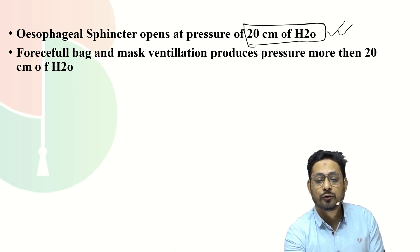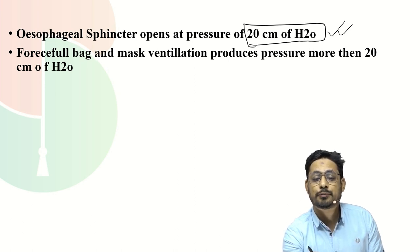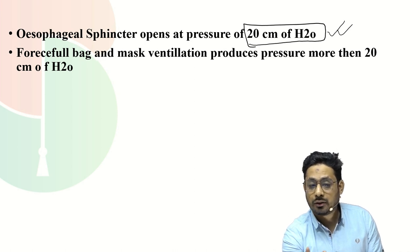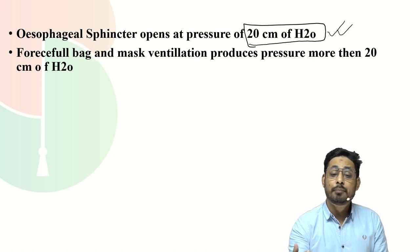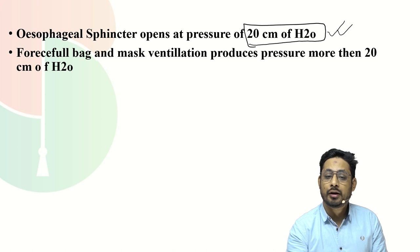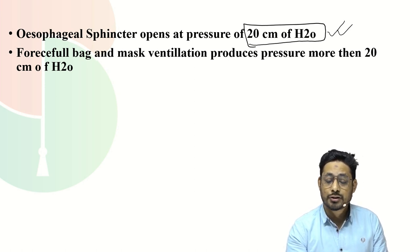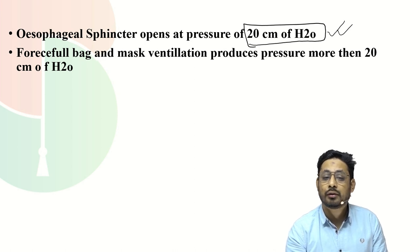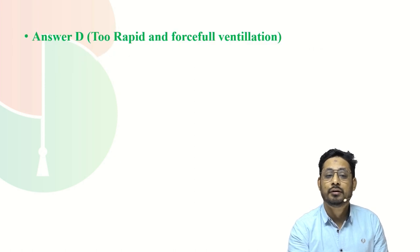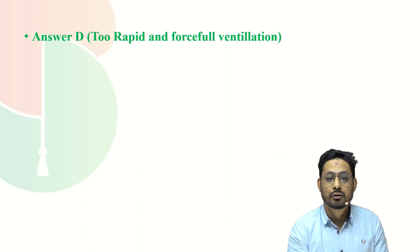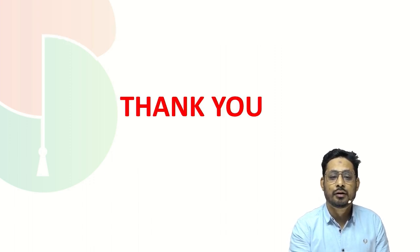While ventilating the patient, if we use pressure above 20 cmH₂O, the esophageal sphincter opens and air used for ventilation may go into the esophagus and then into the stomach, causing gastric distension. Therefore, forceful bag-mask ventilation producing pressure more than 20 cmH₂O will cause the esophageal sphincter to open and result in gastric distension. The answer is D — too rapid and forceful ventilation. If we ventilate the patient too rapidly and too forcefully, this will cause gastric distension.